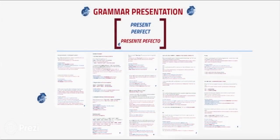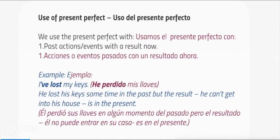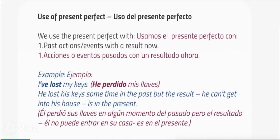Unit 3 grammar presentation: present perfect. We use the present perfect with: one, past actions or events with a result now. Example: